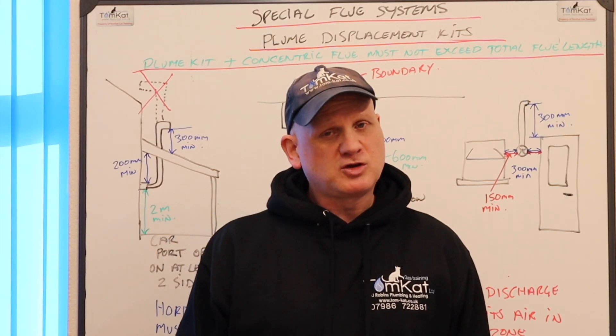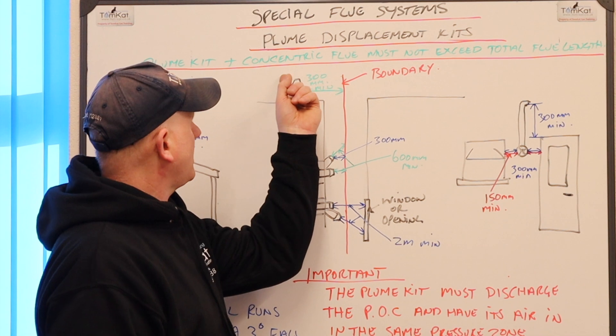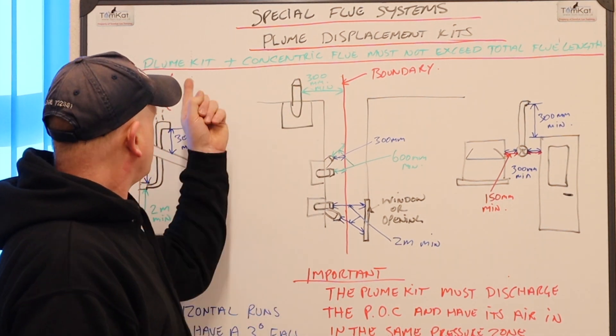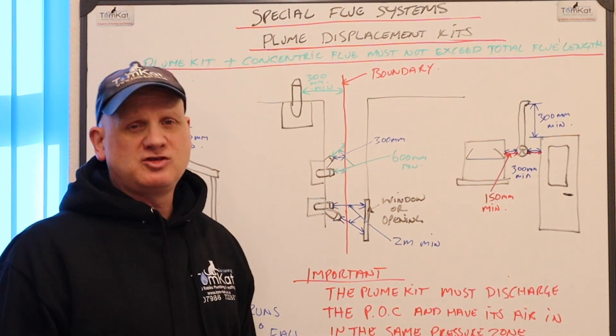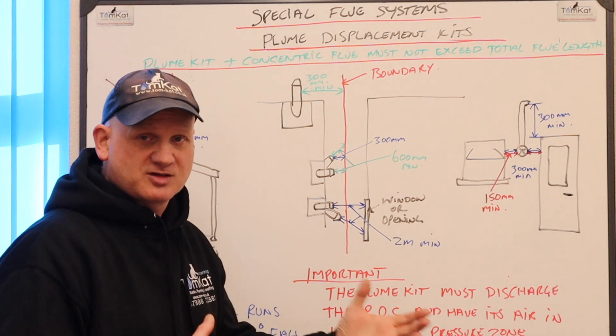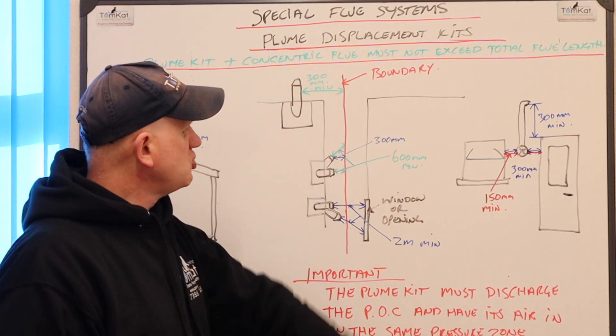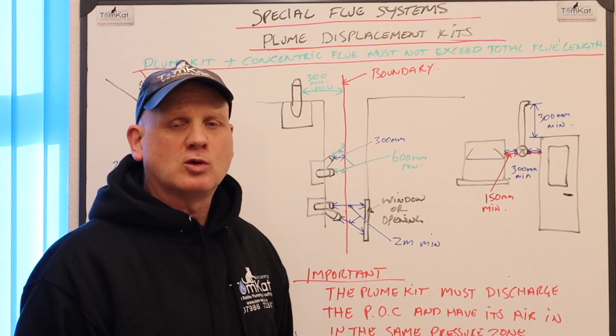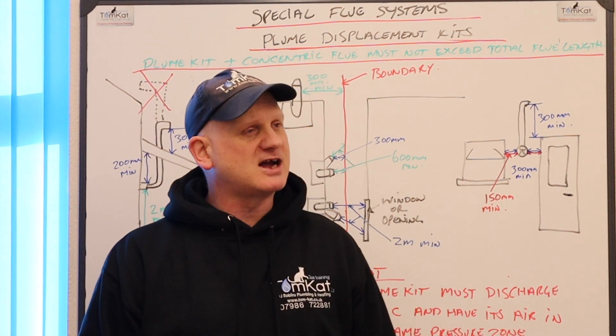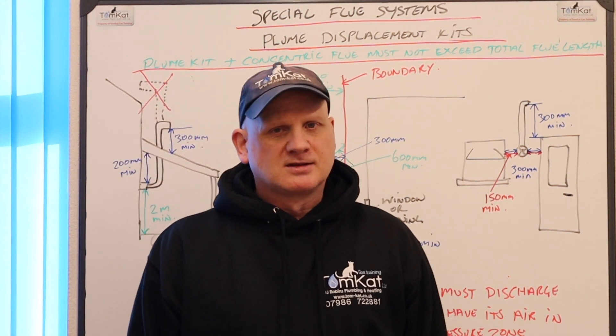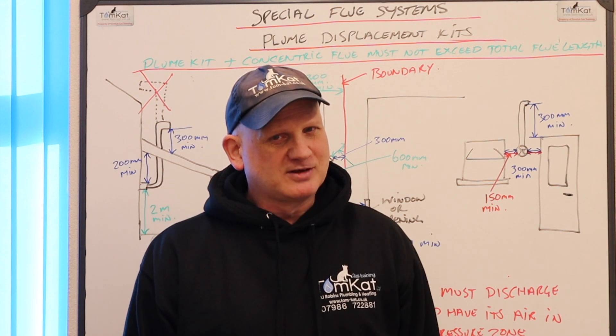Another important flue consideration is what I've put here in green. So the plume kit plus the concentric flue system, so the standard flue system, must not exceed the total length of the flue system designed for that boiler. So there might be a bit of maths involved.